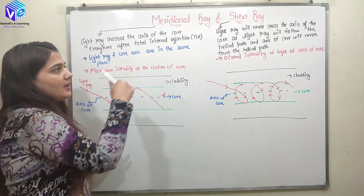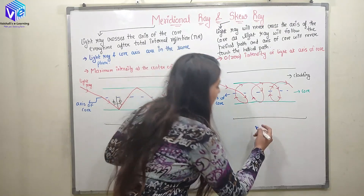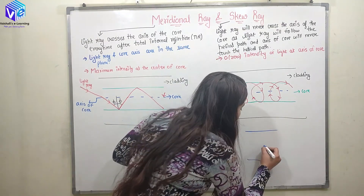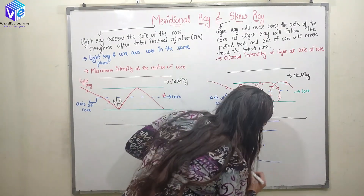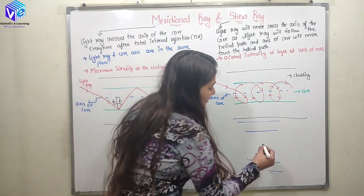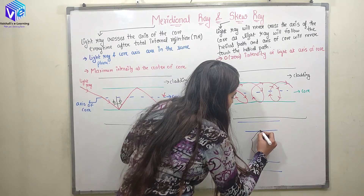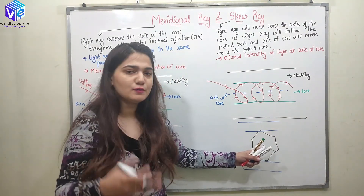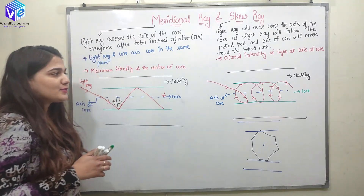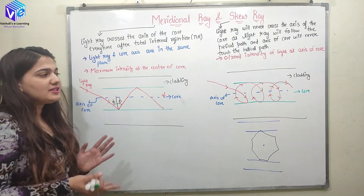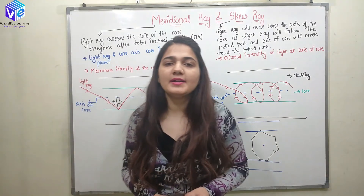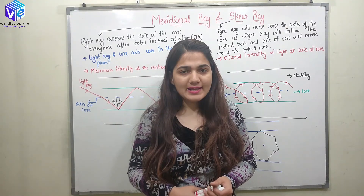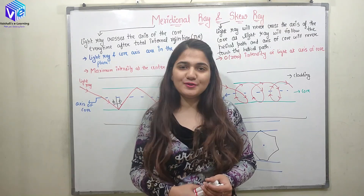I hope you understood the difference between the meridional ray and the skew ray. If I see this from the top view and then from the side view, here we have the axis of the core passing through this point, and the light ray follows a structure that does not pass through or even touch the axis of the core. I hope you understood both of them and the difference between them. If you have any doubt, put it in the comments and I will reply as soon as possible. Please give feedback, push the like button, subscribe to the channel, and share it with your friends. Thank you so much.